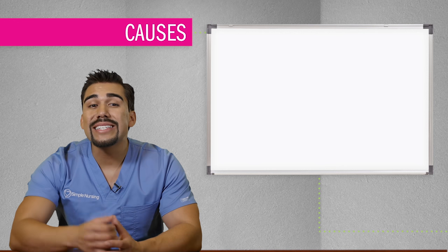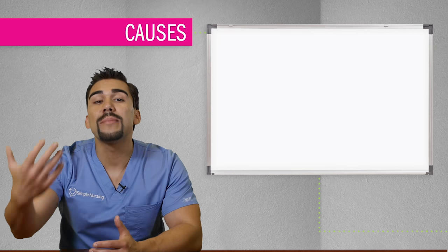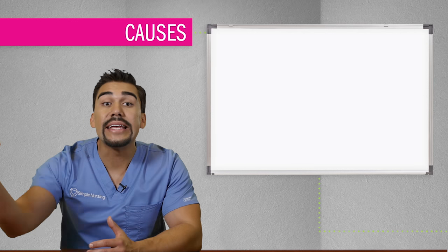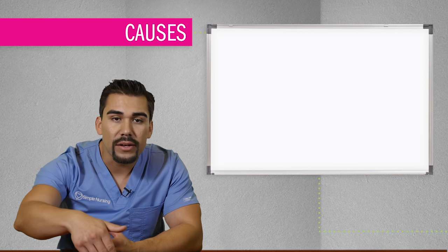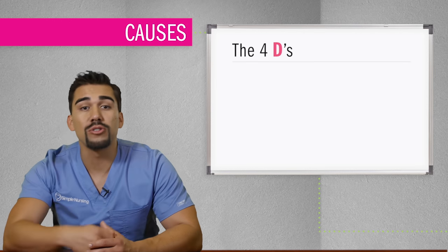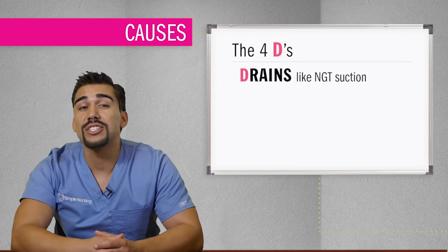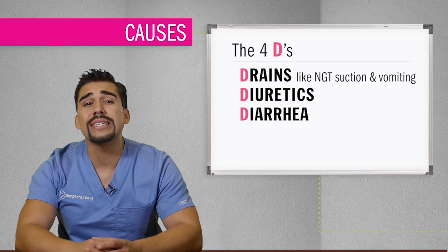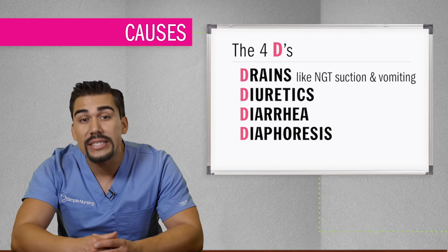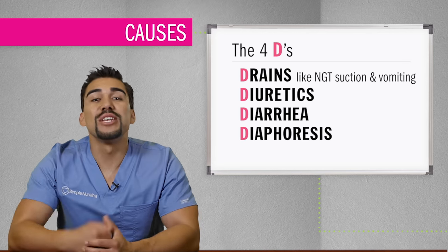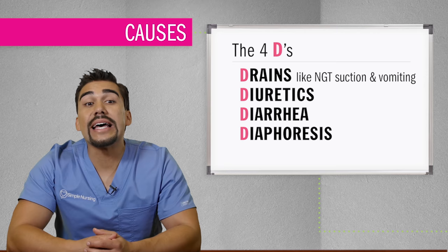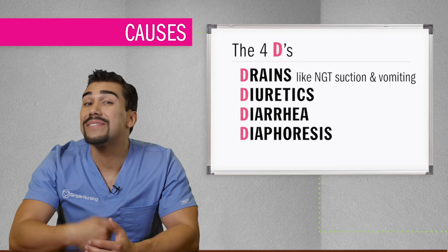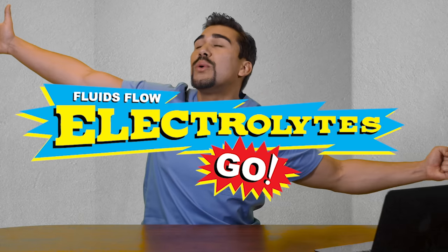The main causes that drain sodium from the body — we use the four D's: drains like NG tube, diuretics, diarrhea, as well as diaphoresis, which is profuse sweating. Simply, all fluids that leave your body have some type of electrolytes, because where fluids flow, electrolytes go.